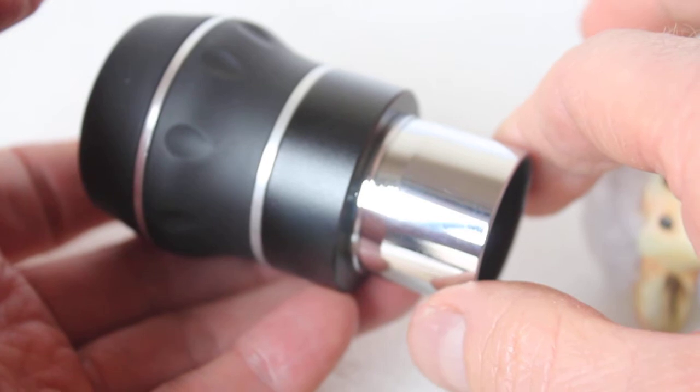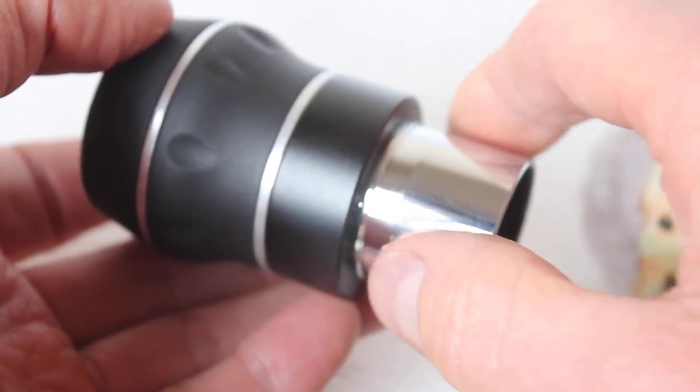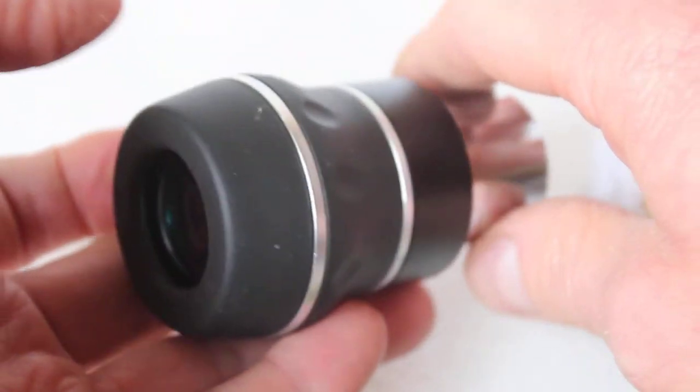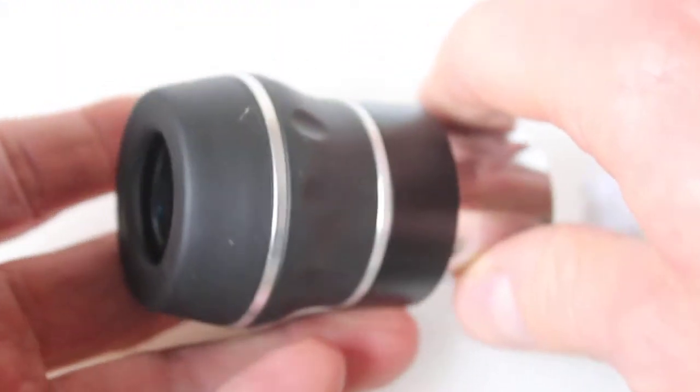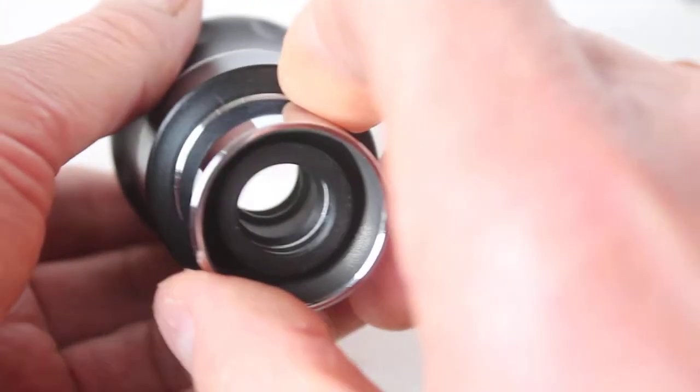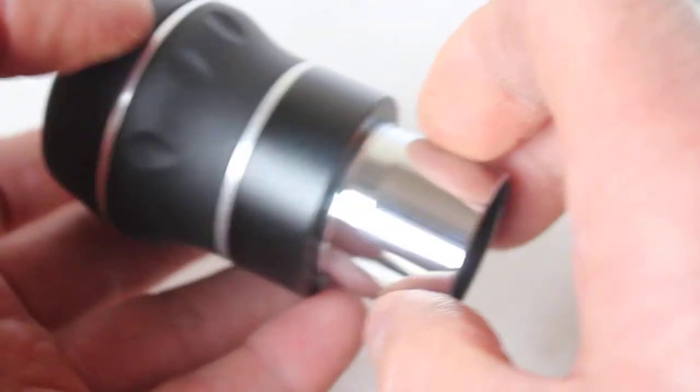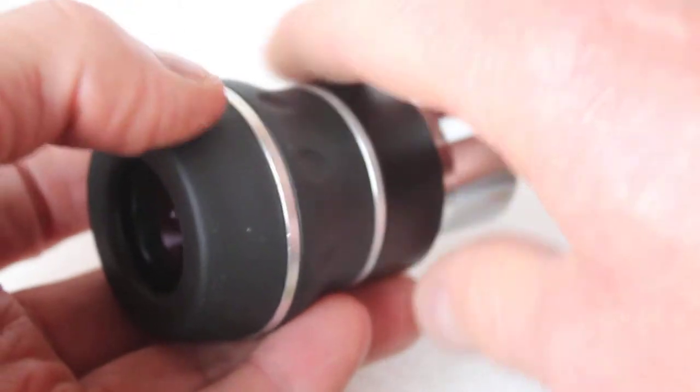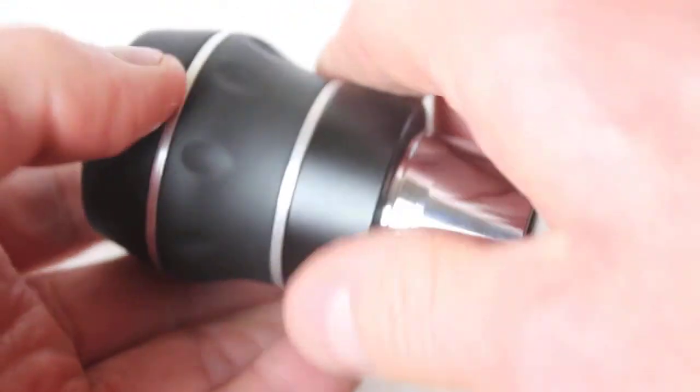If it's new, the moment you strip down an eyepiece you instantly invalidate the warranty. So I would only recommend doing this if you've bought a used eyepiece and you want to get rid of that annoying loose lens rattle. It shouldn't be a problem—the lens isn't going to come out—but it's just a slight annoyance.